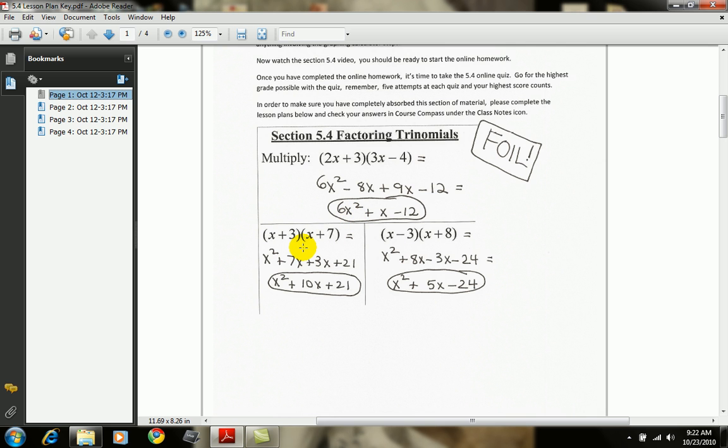In the next example, the same thing happens. x times x is x squared, the outer product is 7x, the inner product is 3x, and the last two multiplied together is 21. When you collect like terms, you're left with x squared plus 10x plus 21.